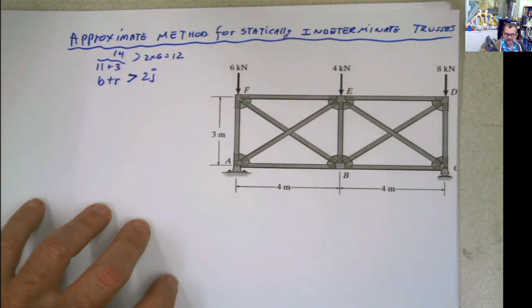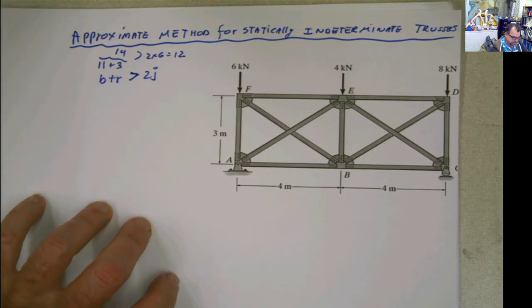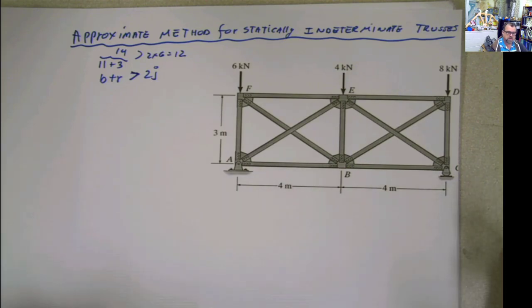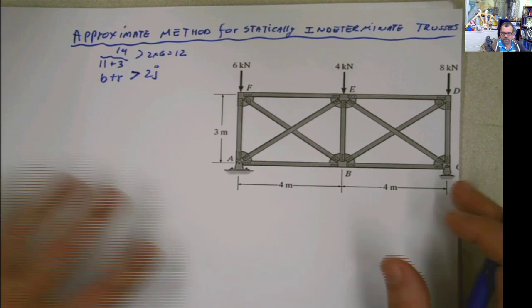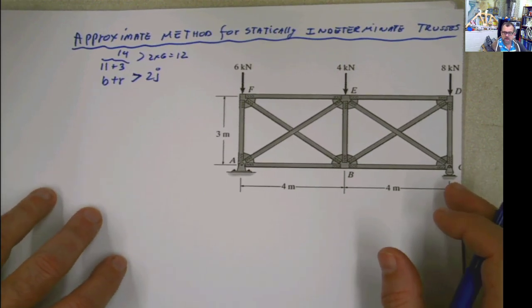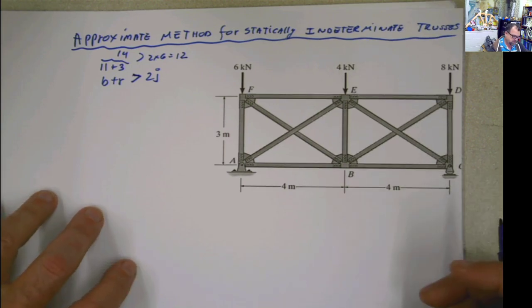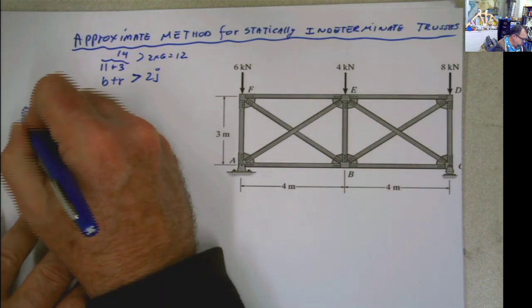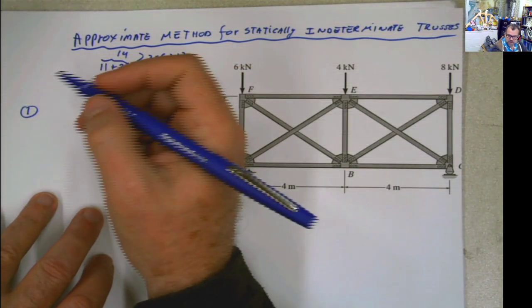So this is going to be statically indeterminate of the second degree. So somehow, we have to come up with those extra equations, or those extra pieces of information that will help us to solve this problem. So when you deal with trusses, there are basically two methods or two approaches, if you will.